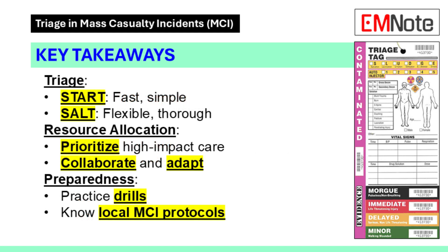Let's wrap up. Triage — START or SALT — sorts patients fast. Resource allocation prioritizes high-impact care and teamwork. Preparedness: drills, plans, and ethics ties it all together. You've got the framework now — go learn your local MCI protocol and you'll be ready.